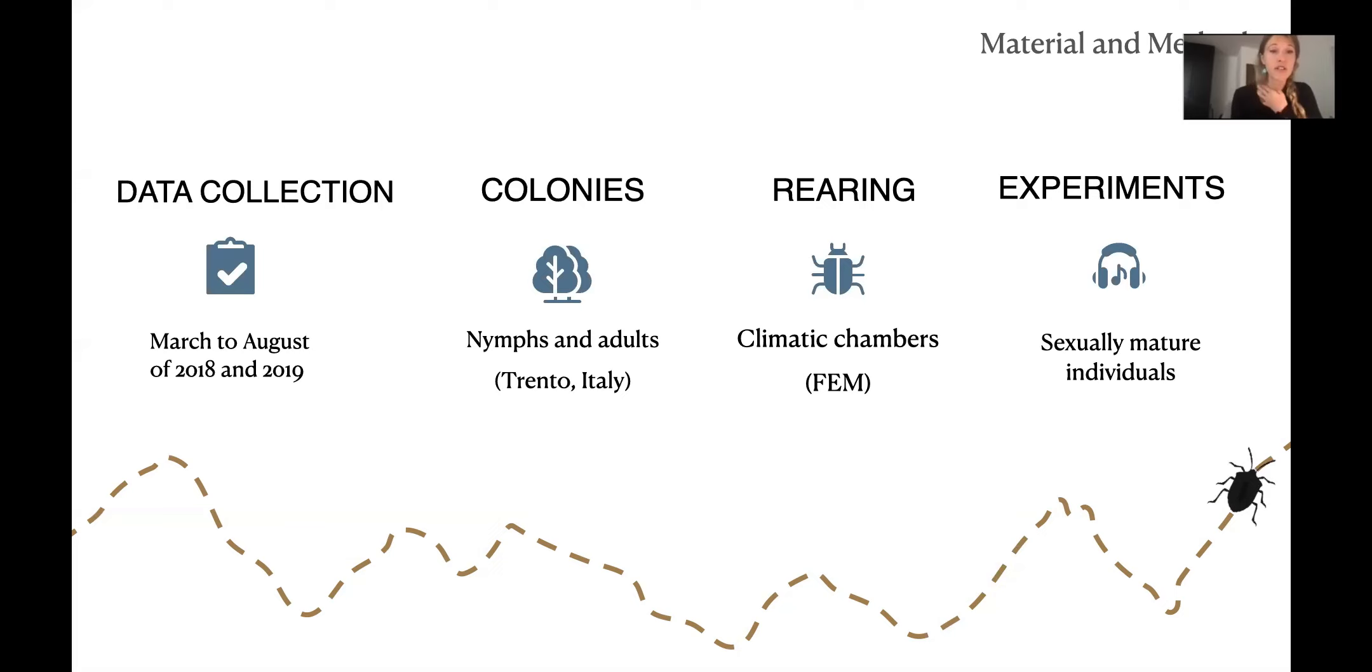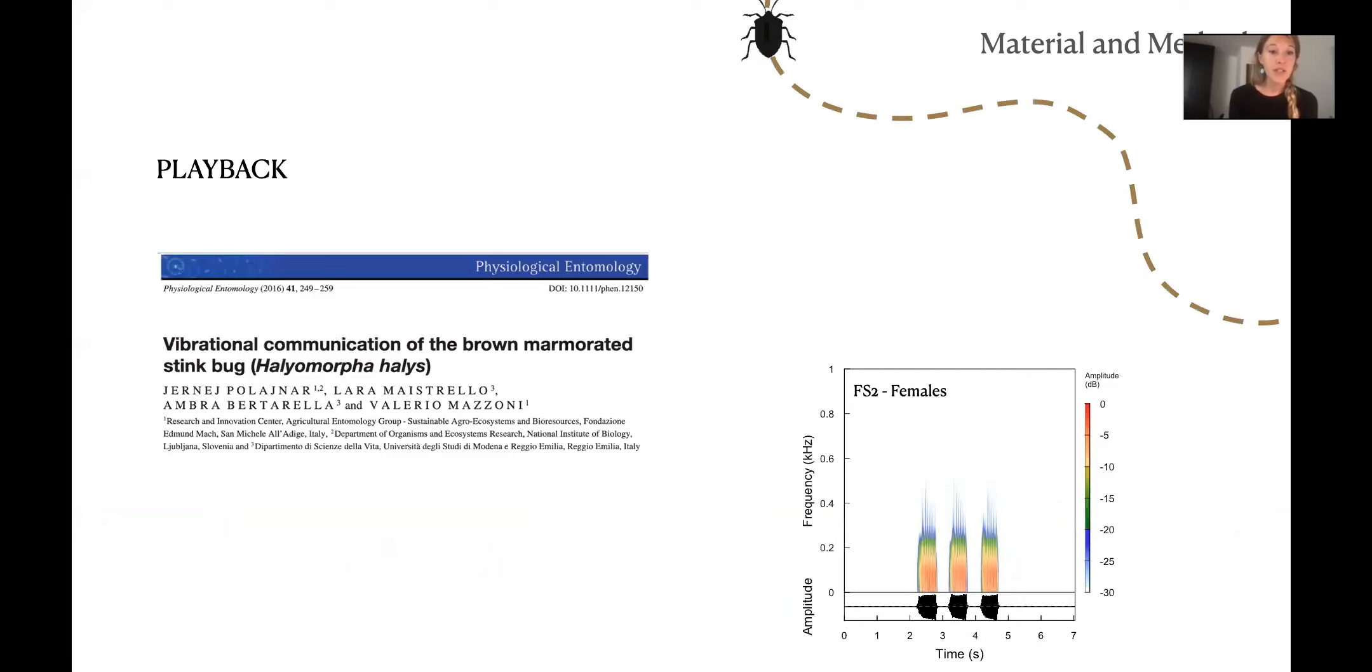Data collection took place from March to August of 2018 and 2019. The colonies of the insects were initiated from adults and nymphs collected in the province of Trento, north of Italy. The insects were reared in transparent plastic boxes in climatic chambers at Fundazione Edmund Mach. All experiments were performed with sexually mature individuals inside an acoustic chamber, which is isolated and allowed us to control temperature, humidity, and no external signals.